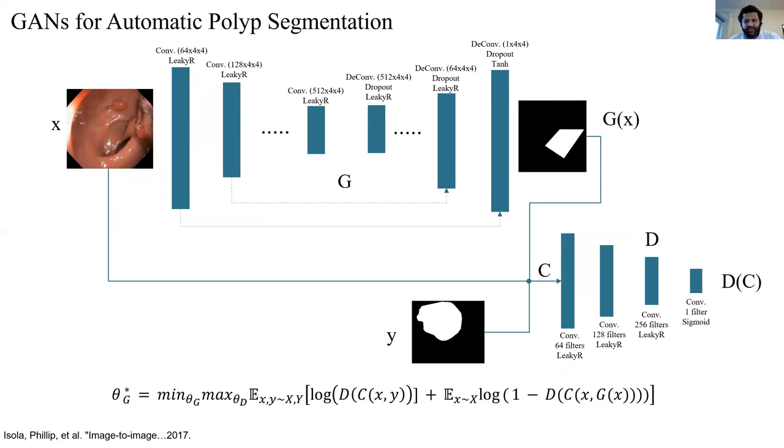It takes both the polyp image and the mask as an input and predicts the likelihood of whether a mask is real or fake translation to that image.